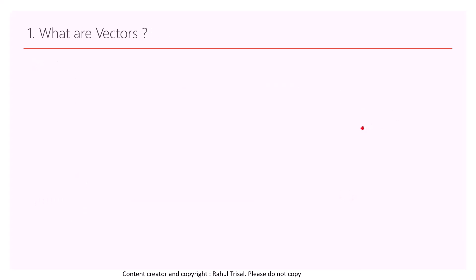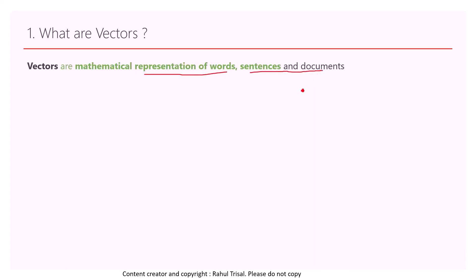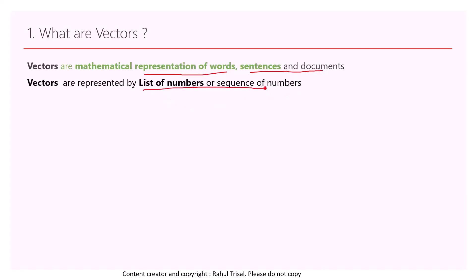Now let's understand what vectors are. Vectors are basically mathematical representations of words, sentences, and documents. That means words, sentences, or documents can be expressed as a list or sequence of numbers. For example, take the word 'apple' — you can represent it as a vector, which is essentially a list of numbers.